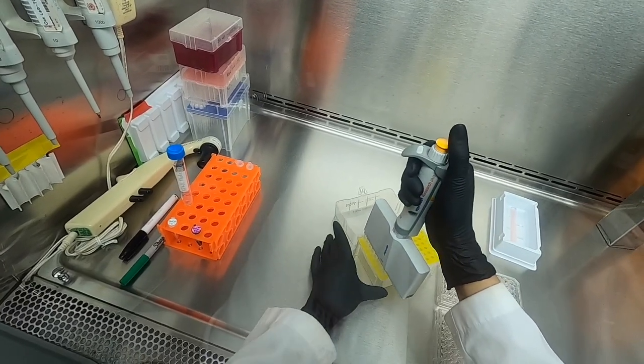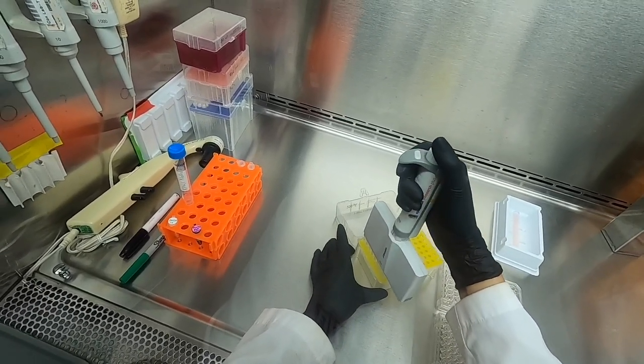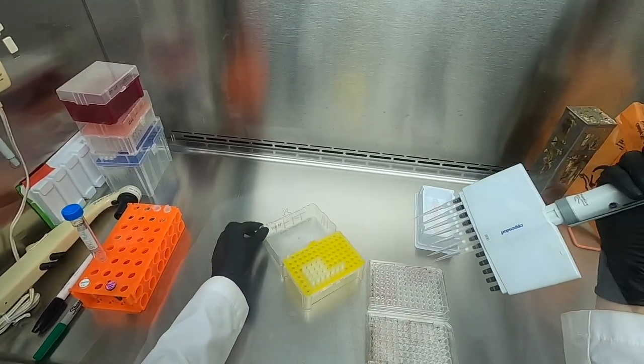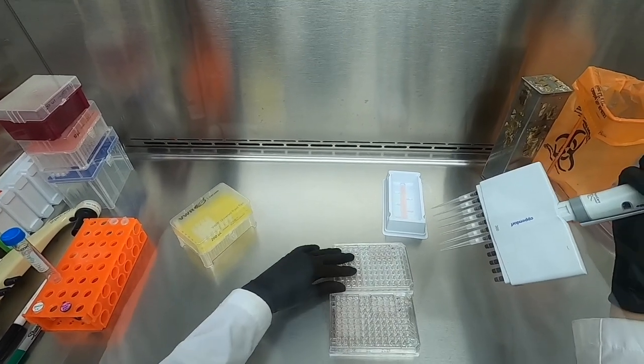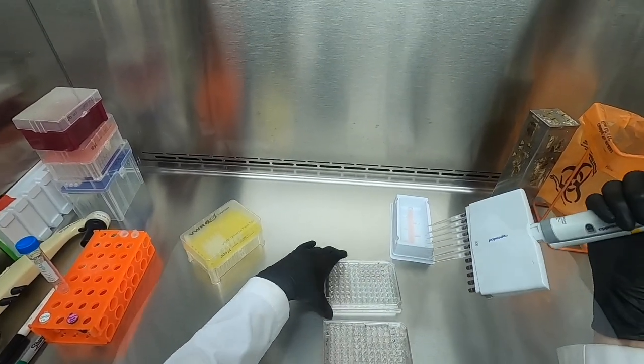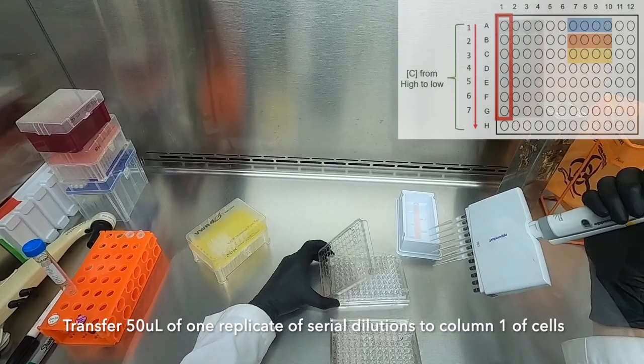In order to calculate the final concentration of compounds in our cell culture plate, it is important to note that each well has 100 microliters and we will be adding 50 microliters from our compound dilutions.